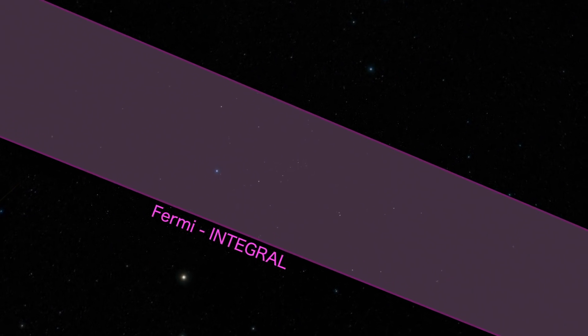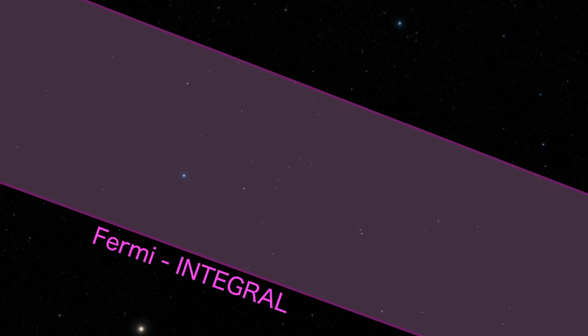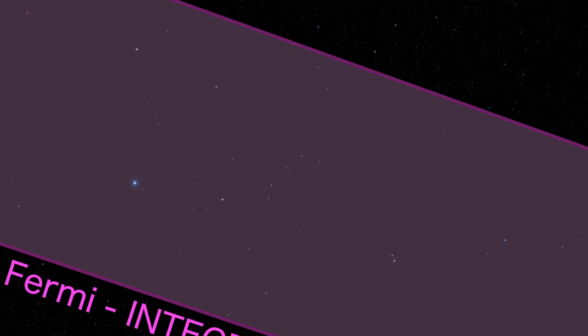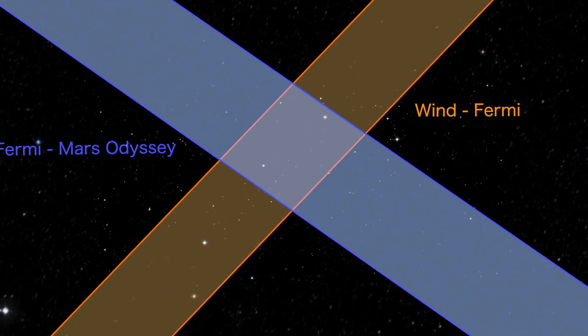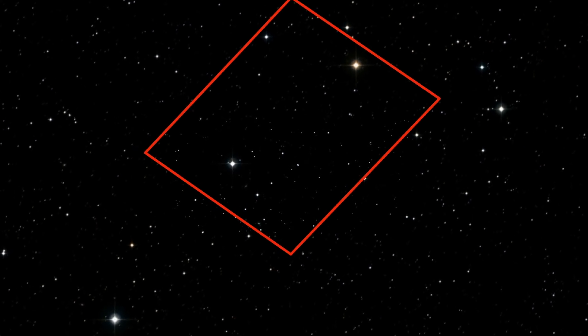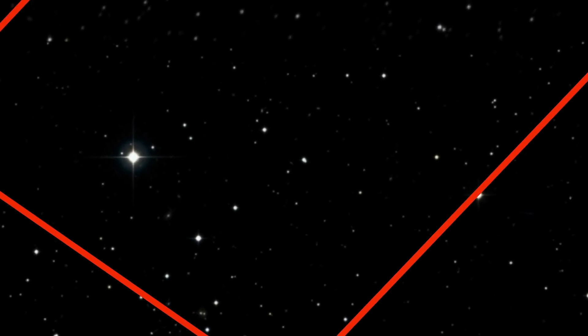On August 26, 2020, Fermi detected a GRB lasting about one second. Instruments on other spacecraft saw it too, including NASA's Wind and Mars Odyssey missions. They helped narrow down the location to a patch of sky in the constellation Andromeda.